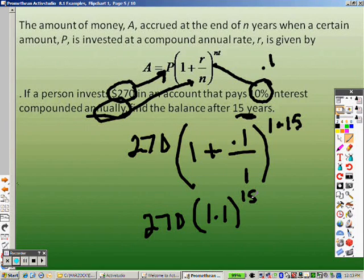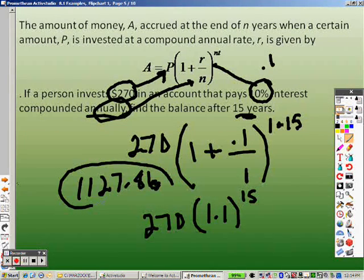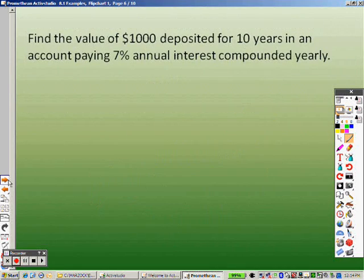So really, you need to plug that in on your calculator. What that means is, it's 270 times, parentheses, 1.1 to the 15th power, and we end up getting, when you plug that all in, you end up getting 1,127.86. So, you plugged in 270 bucks, and you made that much by the time it was all said and done. But keep in mind, it was 15 years of you doing it.